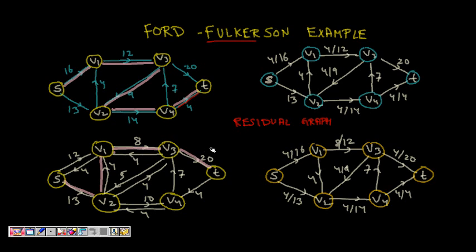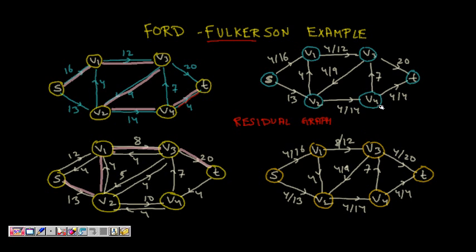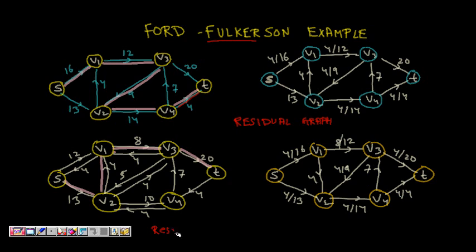Continuing the residual graph: V2→V4 used 4 out of 14, so anti-parallel V4→V2 gets 4, and 10 remains from V2→V4. V4→T used all 4 out of 4, so anti-parallel T→V4 gets 4 with 0 remaining. This residual graph shows how much flow can still be sent and in which directions.